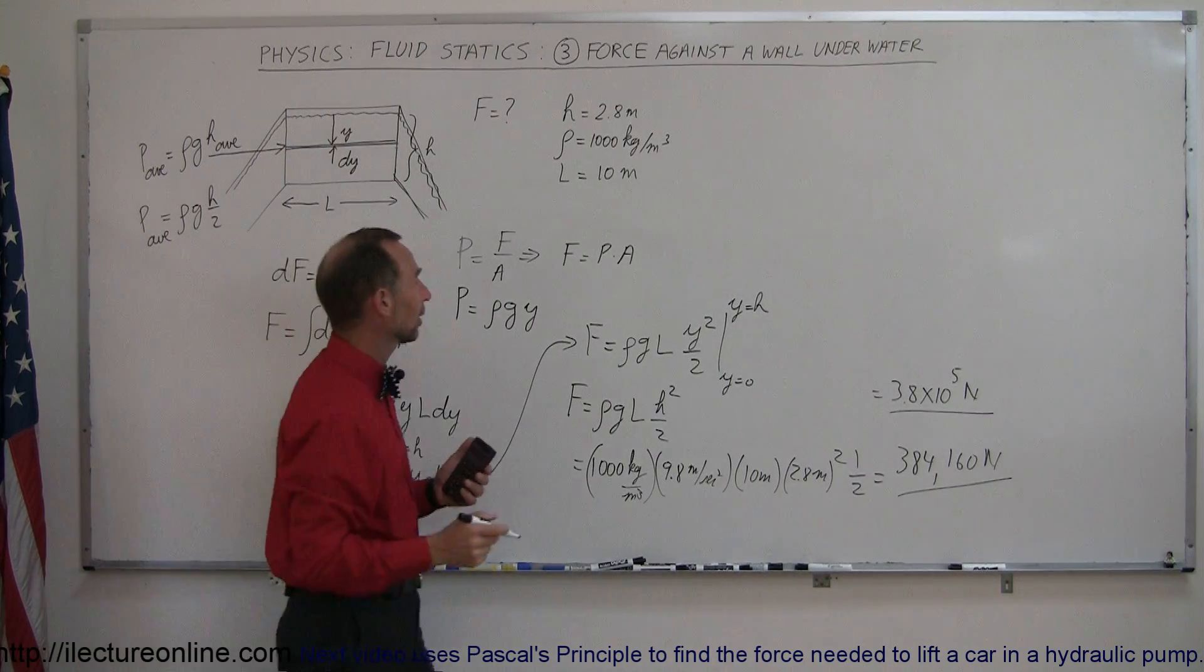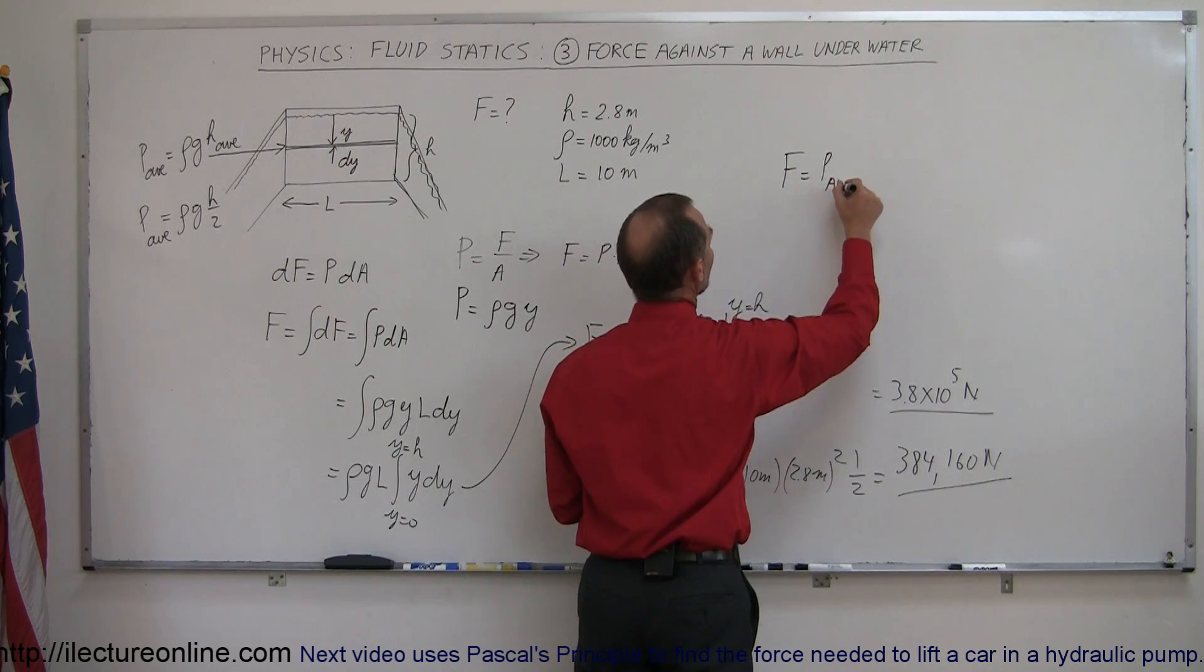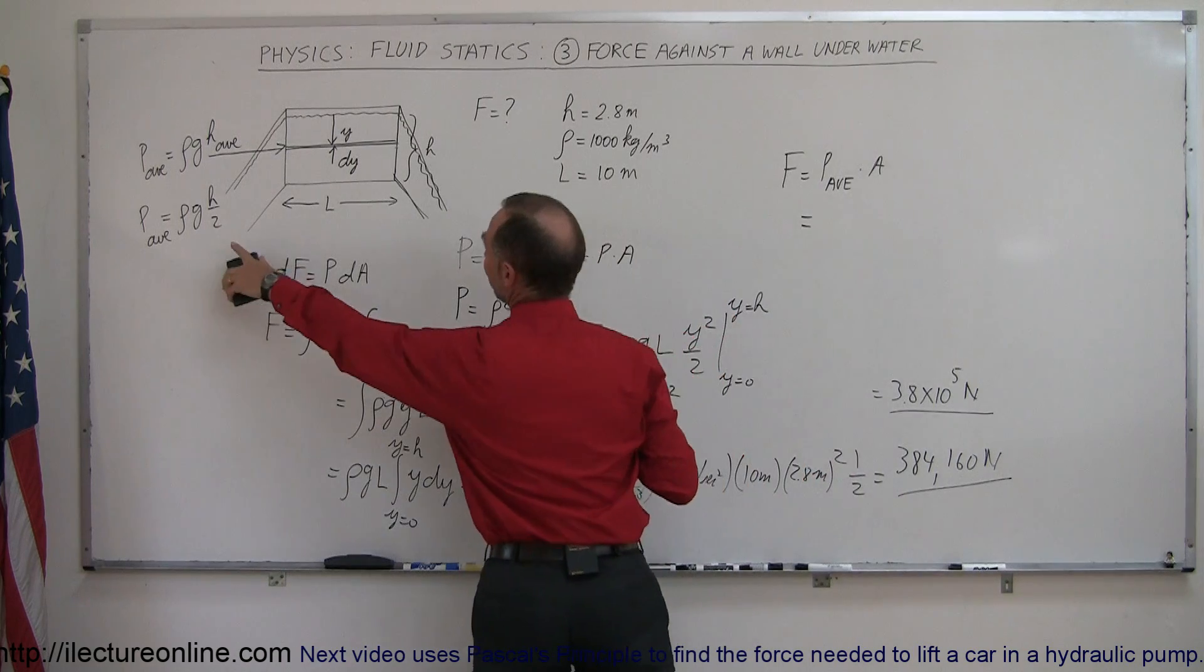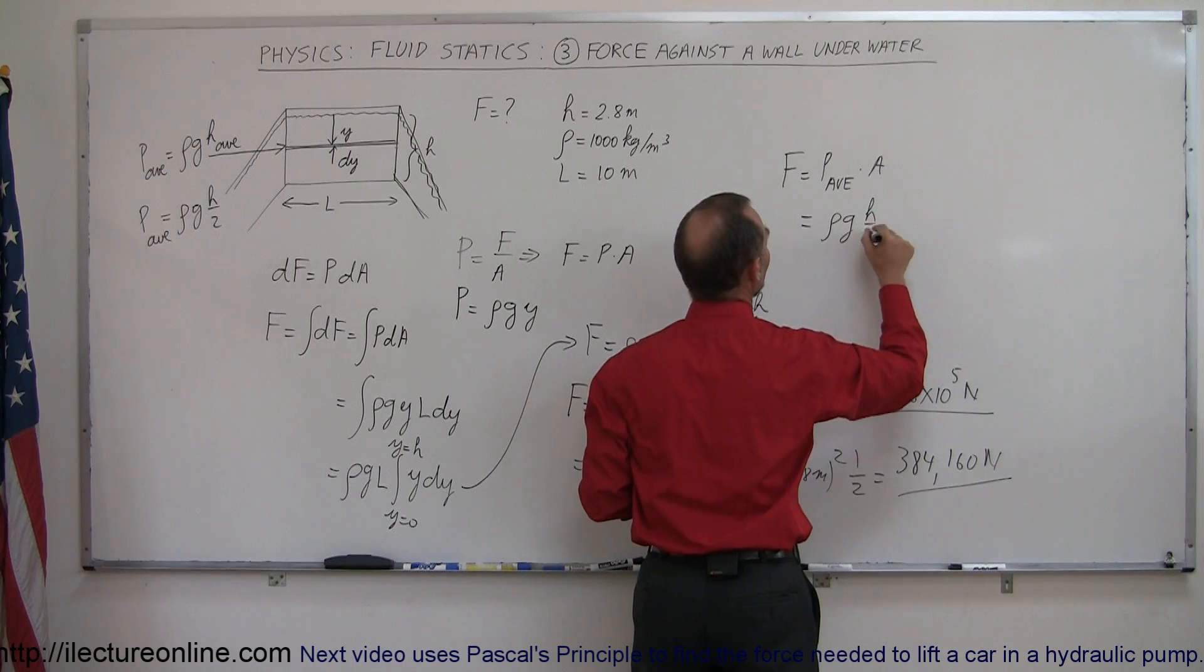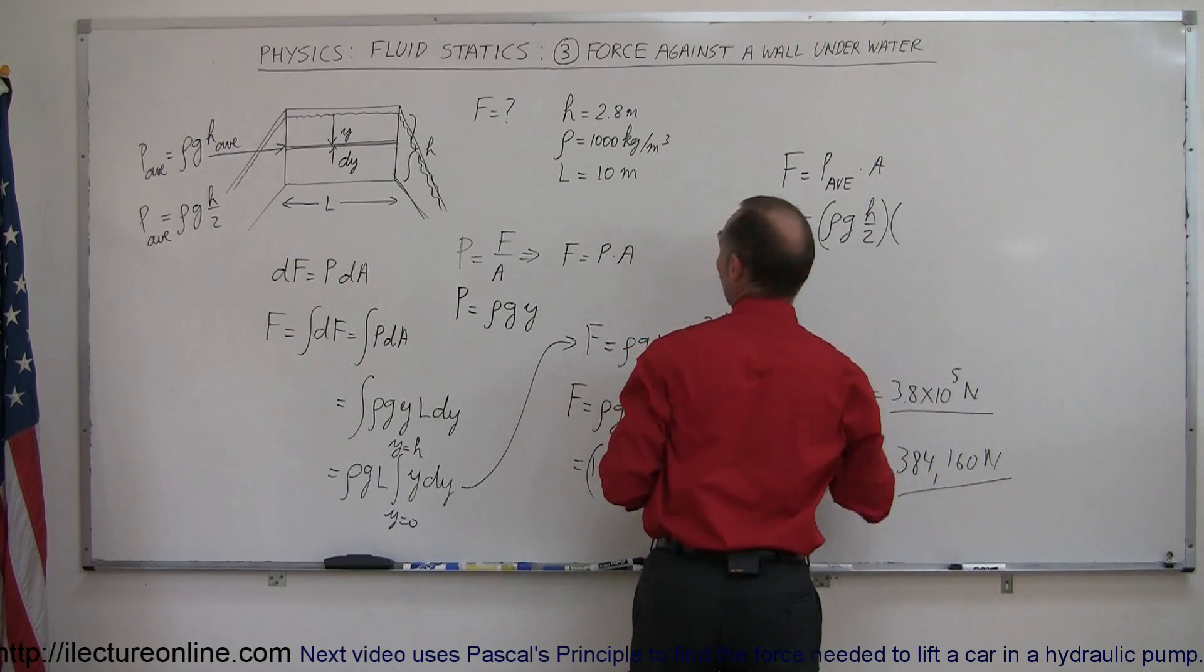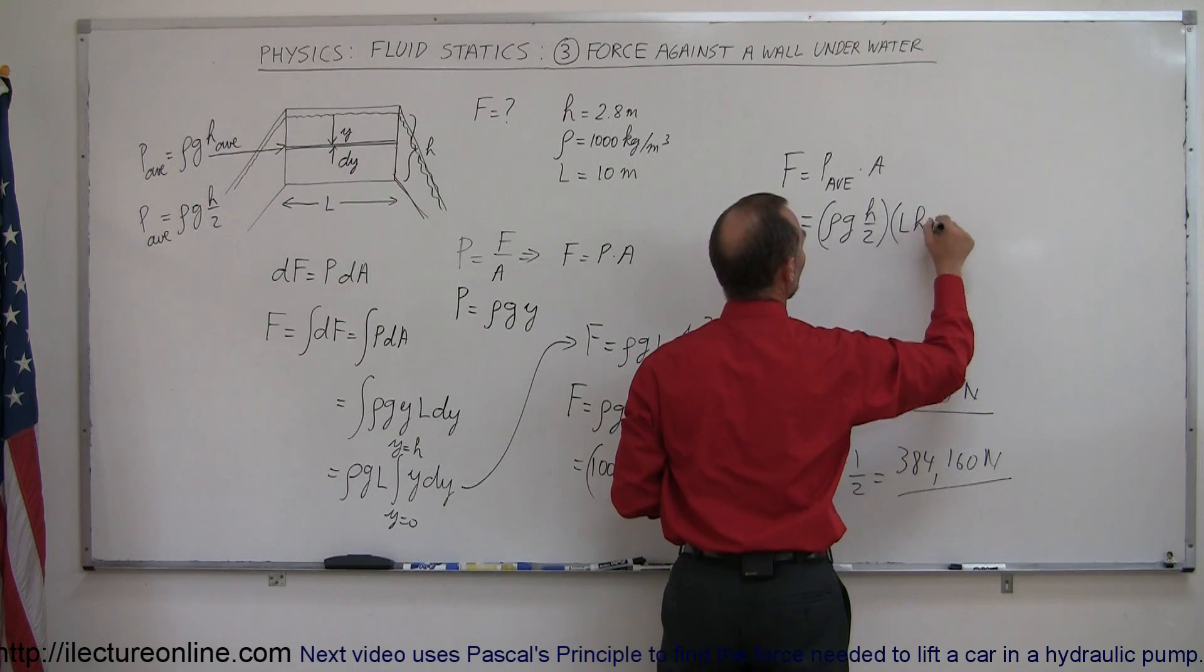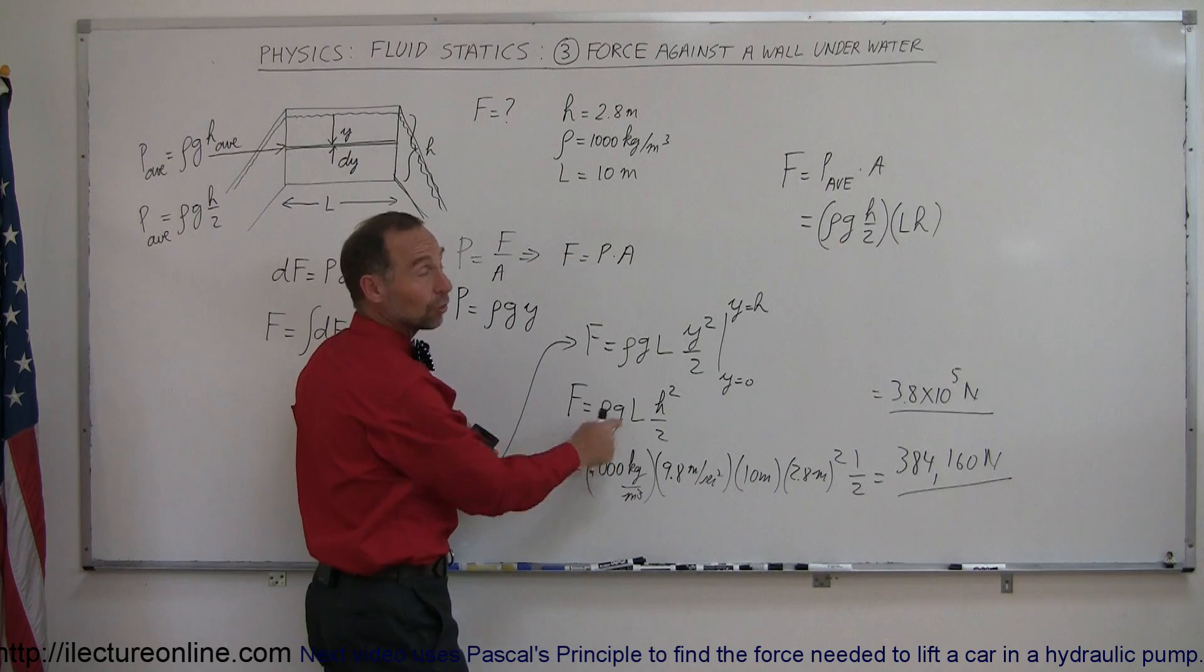So let's see if we can do that. We can say that the force is equal to the average pressure times the area, and the average pressure can be found by taking ρgh divided by 2, and multiplying times the total area, which would be L times h.